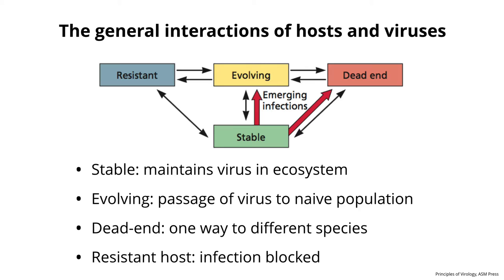We think of Ebola virus as a dead-end host interaction. Finally, we have resistant hosts where the virus gets in but nothing happens — the host isn't suitable, the virus doesn't replicate and is quickly cleared. The arrows indicate ways viruses can travel between these categories. So if a stable interaction occurs in an animal in a forest, that virus could get into a human as a resistant situation, could evolve slowly, or could be a dead end.